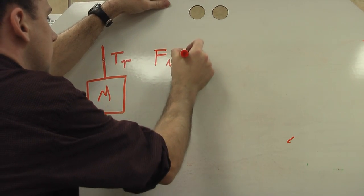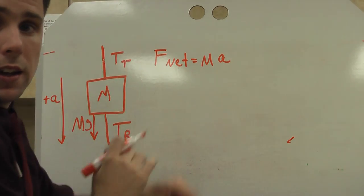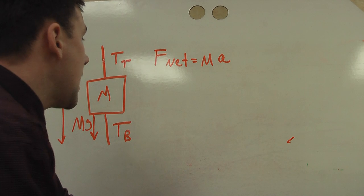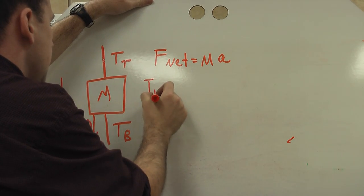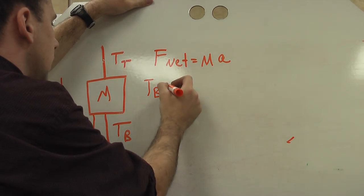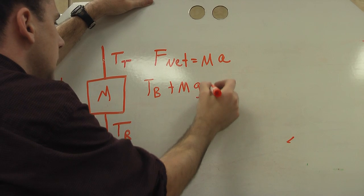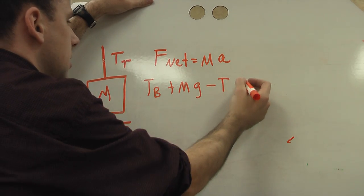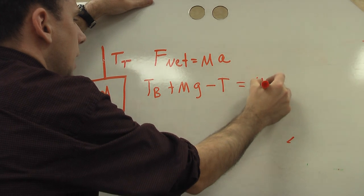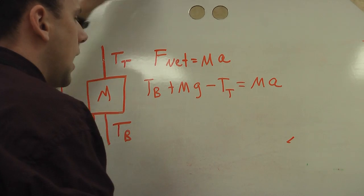F net equals ma. Now when we add up the forces, the forces going down are the bottom tension is pulling it down, the one that I'm pulling it with, plus the weight, which is mg, minus the tension, which is trying to work against the direction I'm accelerating in. And that's going to equal ma.